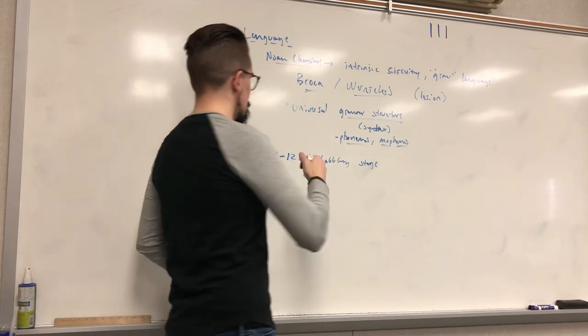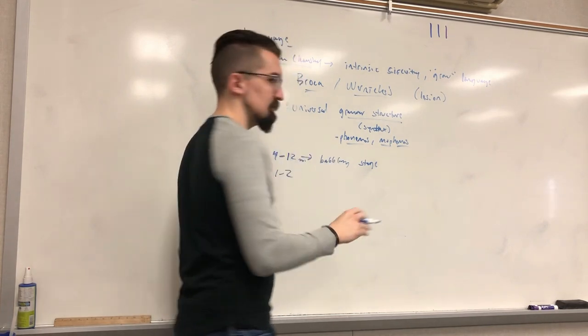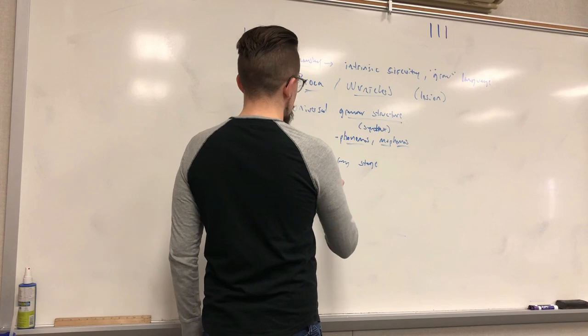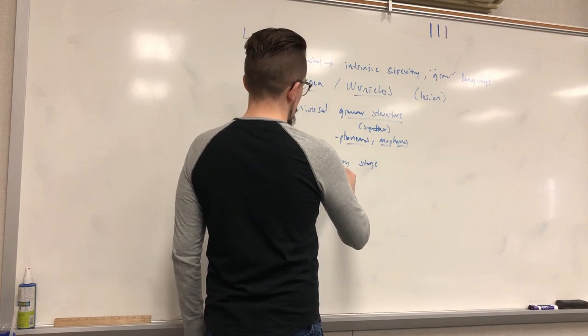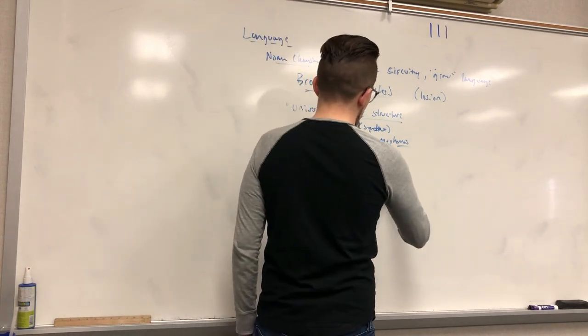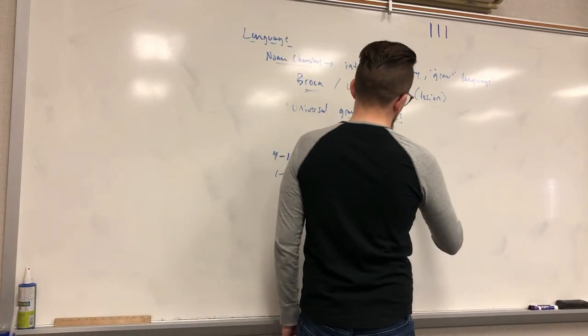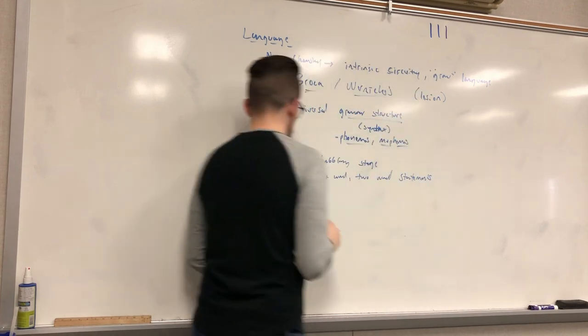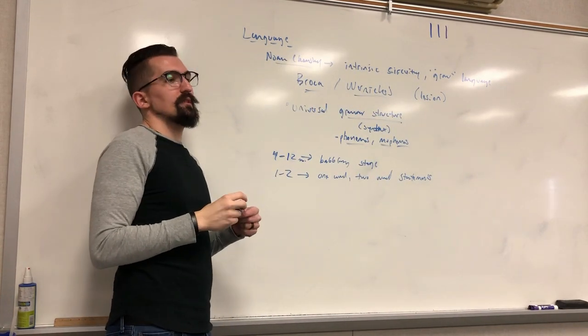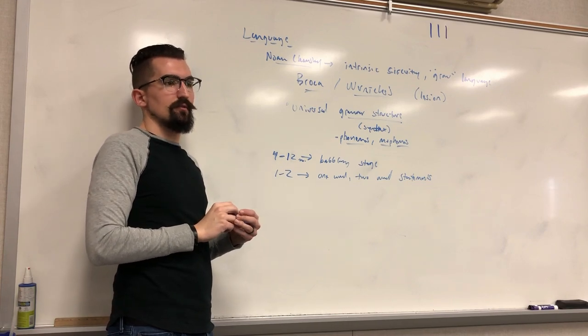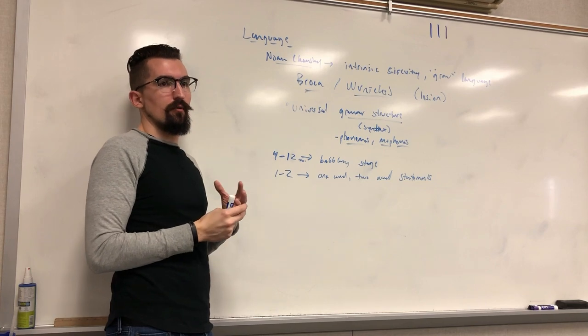And then when they start stringing them together, and attaching that specific string to a specific object or situation, that's when they're gripping the actual language. This is the babbling stage, and it can vary. So some kids start it later or end it later than others, or earlier than others. But from years roughly one to two, and of course some kids can hit this earlier, they start using either one word, or as they get closer to two, potentially two-word statements.